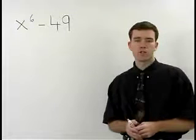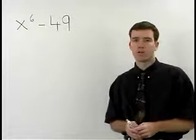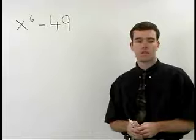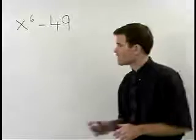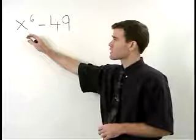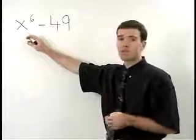Remember that if a variable is taken to an even power, that variable is a perfect square. In this case, x to the 6 would therefore be a perfect square.